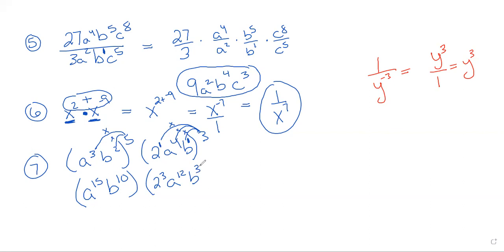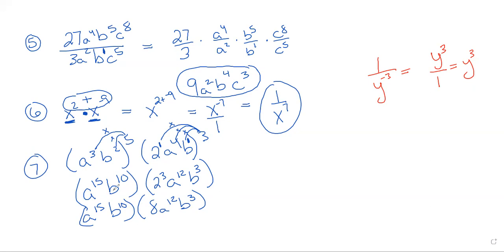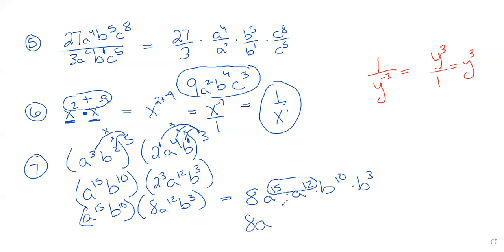So all of those will get multiplied together, and we can simplify 2 to the 3rd power — that's going to be 8. It stopped here on your paper, but we could go another step further and combine like terms again, like we did on question number 3. We have a to the 15th power times a to the 12th power, and b to the 10th power times b to the 3rd power. So the final answer would be 8, a to the 27th power, and b to the 13th power.